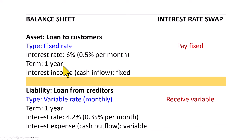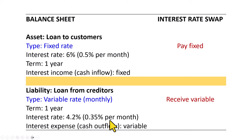On the flip side, the bank has a variable rate liability at an annual interest rate of 4.2%, with interest paid monthly. This means the bank will pay interest at 0.35% in the first month. However, it wouldn't know what the interest rates will be afterward — and that's the issue.